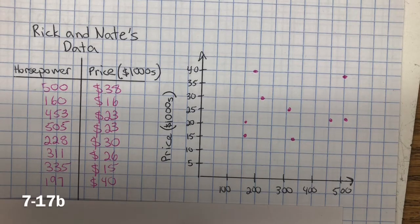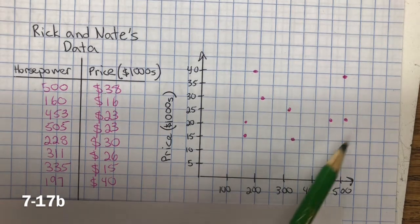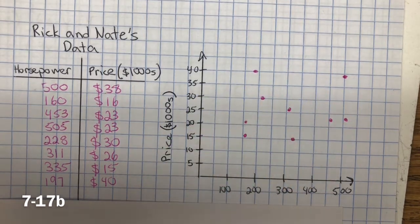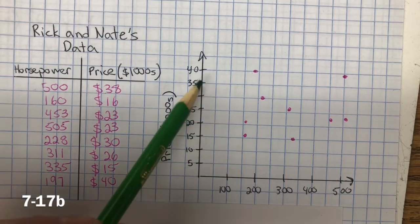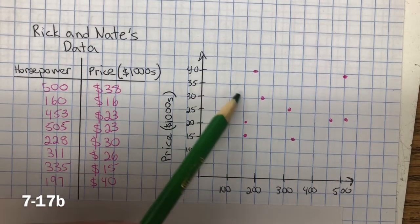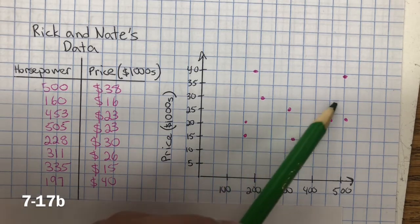Now that I've plotted the points from the table, I can see that the points are scattered all over the graph in no general trend. I don't see a trend line where it's decreasing in price for more horsepower or increasing in price for more horsepower.